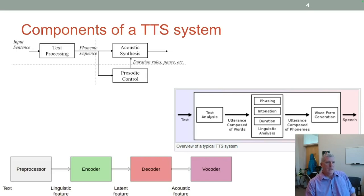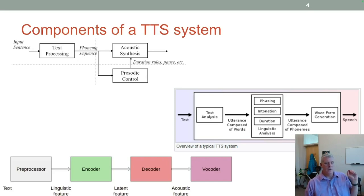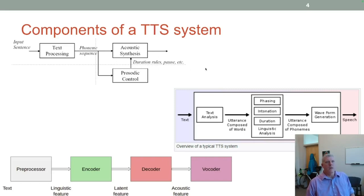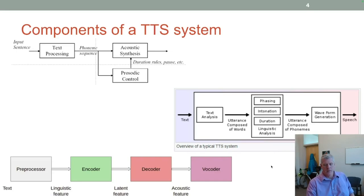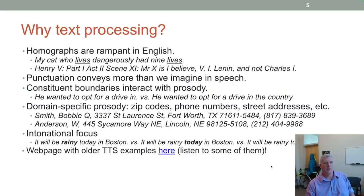Here are various diagrams from different sources about the components of a TTS system. At the top left, an input sentence gets processed through text processing and turned into a phonemic sequence via grapheme-to-phoneme conversion — going from orthography to a phonemic representation — with acoustic synthesis and prosodic control, handling duration rules and pauses. Another diagram deals with machine learning and neural network architectures with an encoder-decoder and a vocoder.